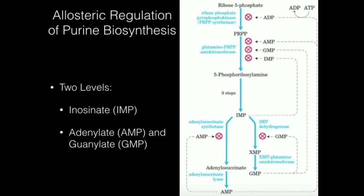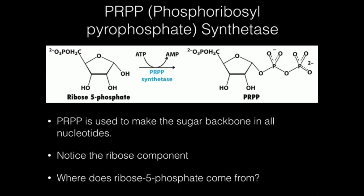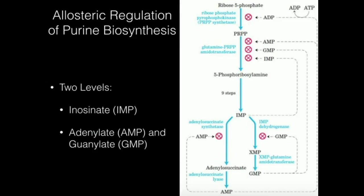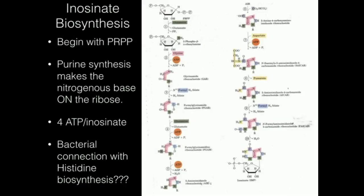We've already talked about this whole process where we go from ribose 5-phosphate and turn that into PRPP. That was through the action of PRPP synthetase. What we didn't go over is this step right here — PRPP to 5-phosphoribosylamine.